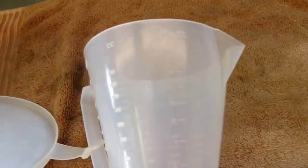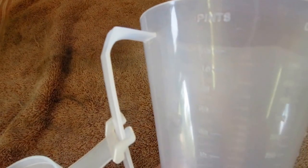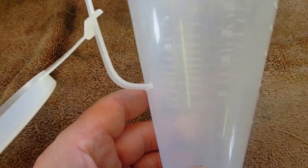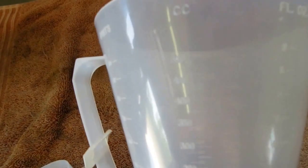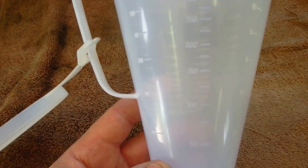On the other side, I'll flip it over, is simply some measurements. You have pints, you can see it coming down, then you have cc's, and then you also have fluid ounces. And again, as I mentioned a moment ago, I use this for mixing other things besides two-stroke fuel.